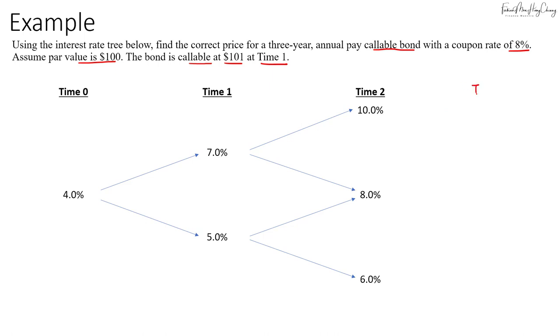We'll start with the same steps as before. At time 3 we have $108, which is the par value plus coupon. Now we'll discount each of these back to the previous period. Discounting using 10%, this will give us a value of 98.182.